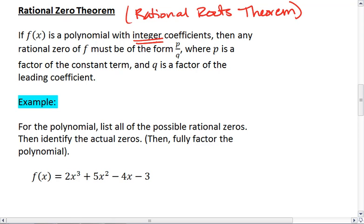This is easier to see with an example, so let's work through the given example on your screen. We're given f(x) = 2x³ + 5x² - 4x - 3. For the polynomial, we want to list all the possible rational zeros, then identify the actual zeros, then fully factor the polynomial.